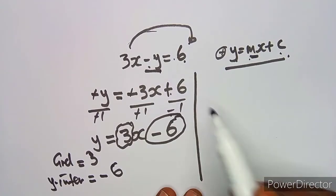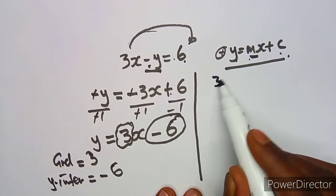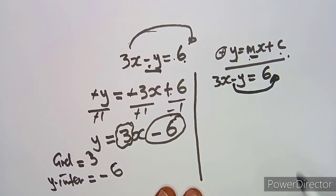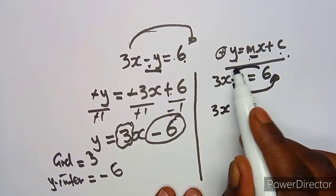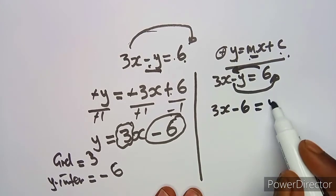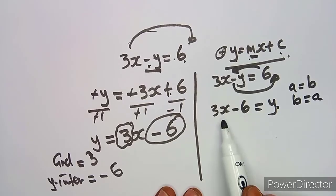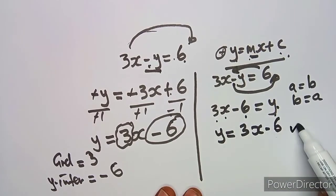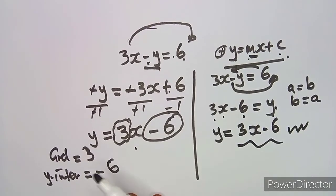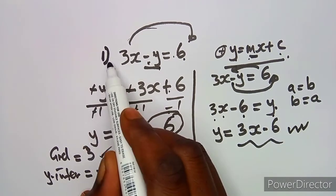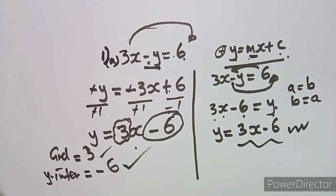We could also do this another way: since this term is negative, I can transpose it directly so it becomes positive, leaving 3x - 6 = y. Since a = b means b = a, this gives y = 3x - 6 — the same result. The gradient and y-intercept are determined the same way from either method.